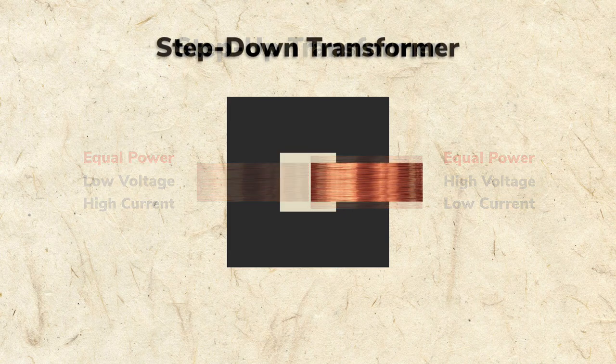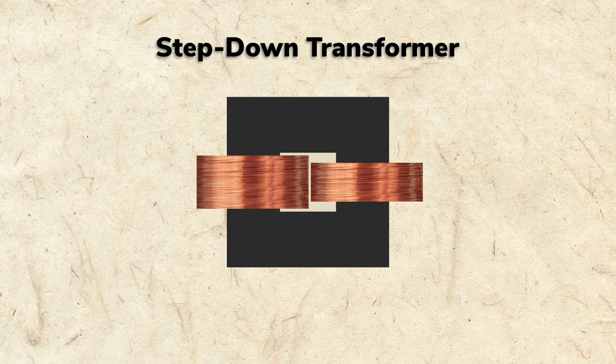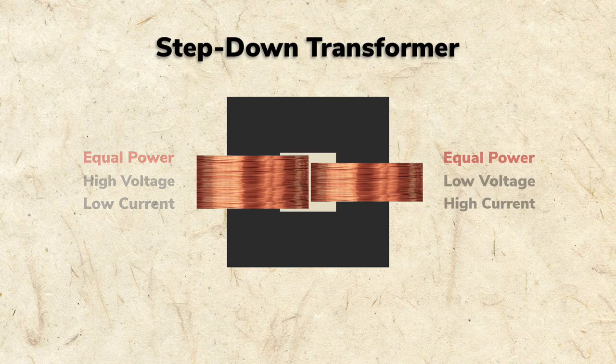The output transformer is a step-down transformer with a smaller secondary coil than the primary. A high-voltage low-current signal goes in, and a low-voltage high-current signal goes out.